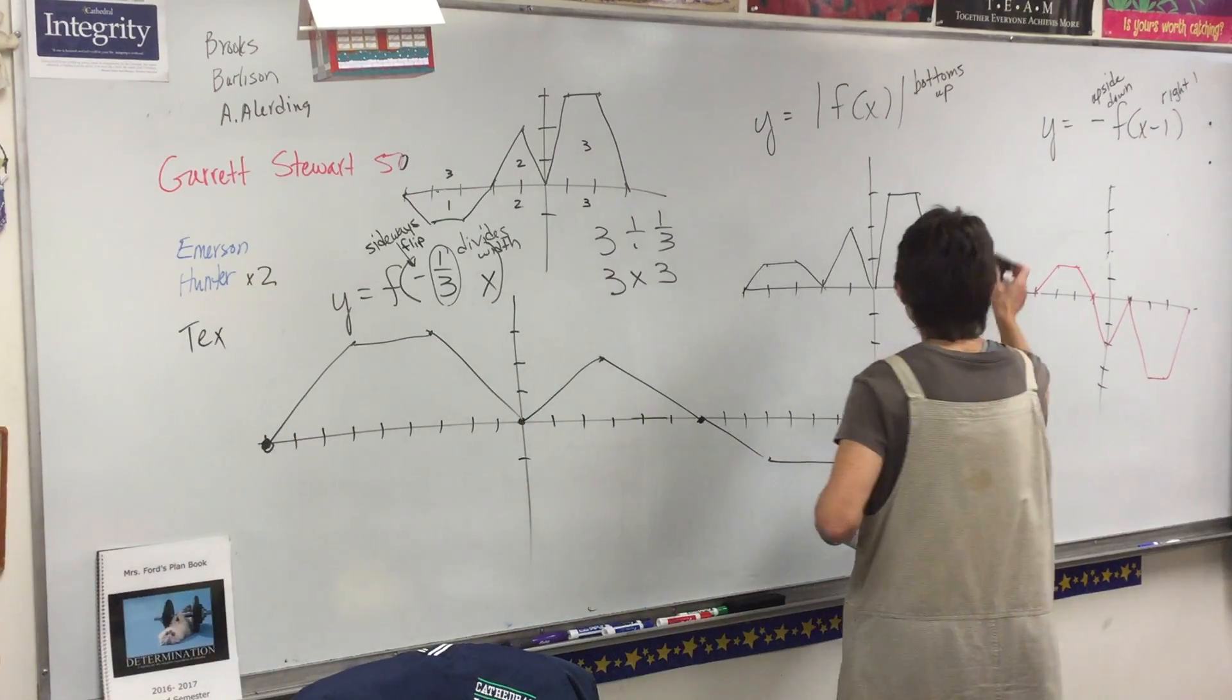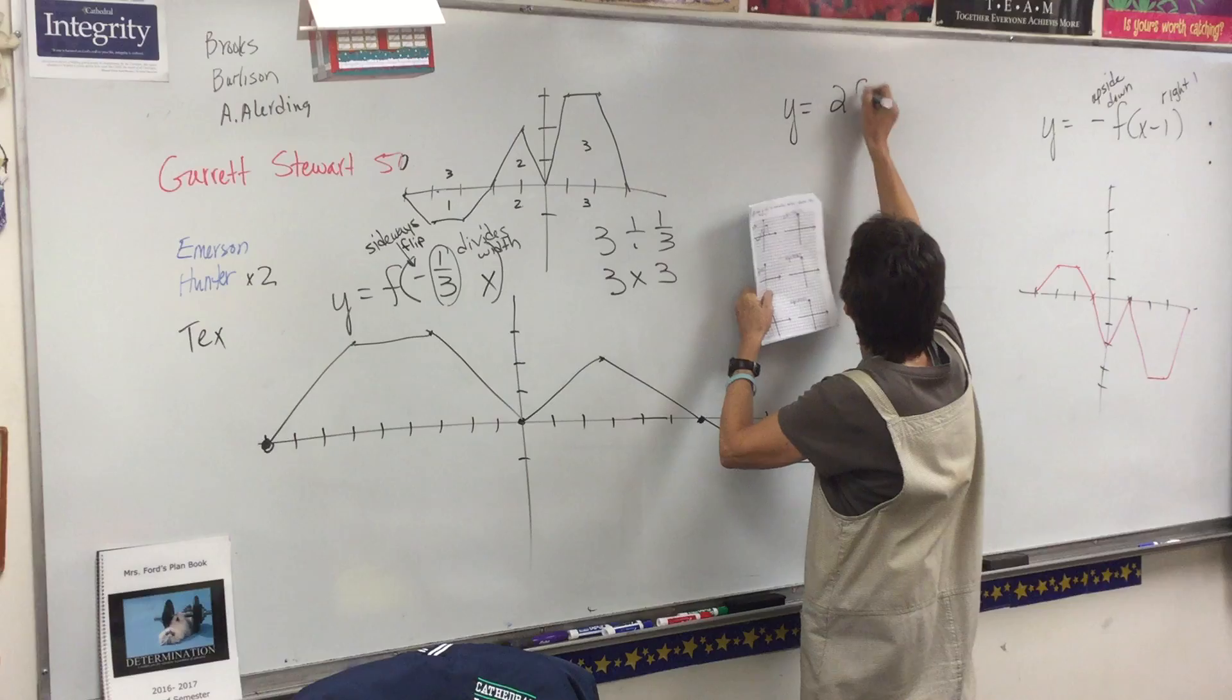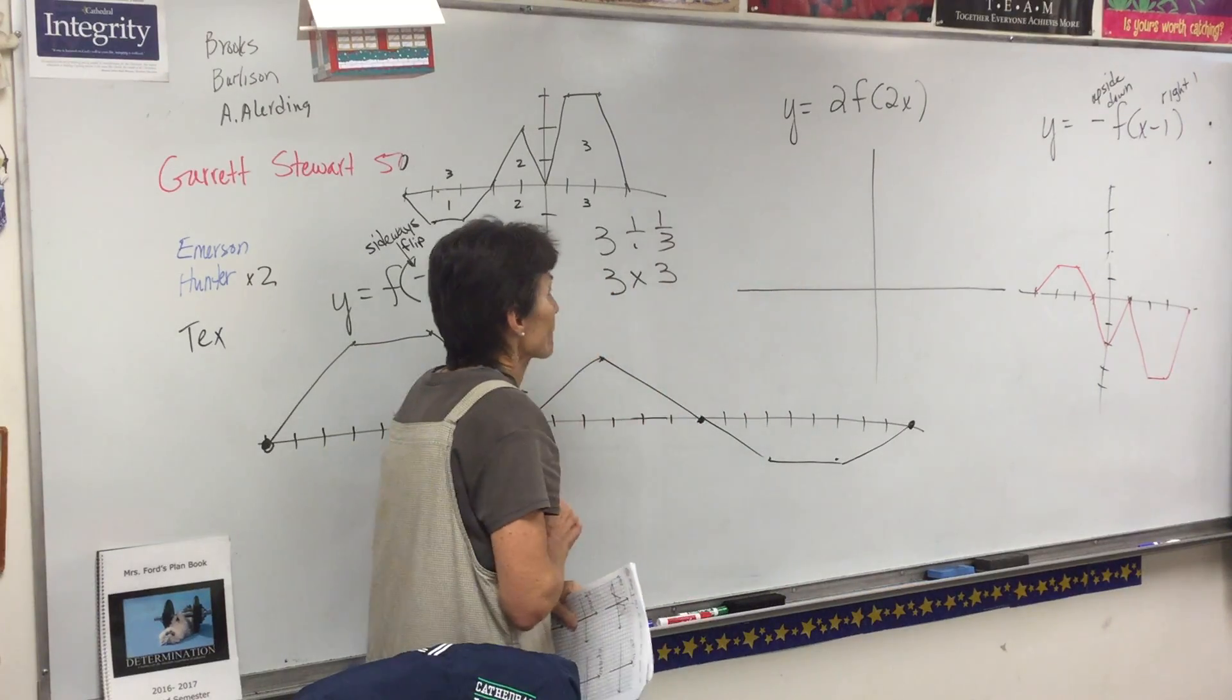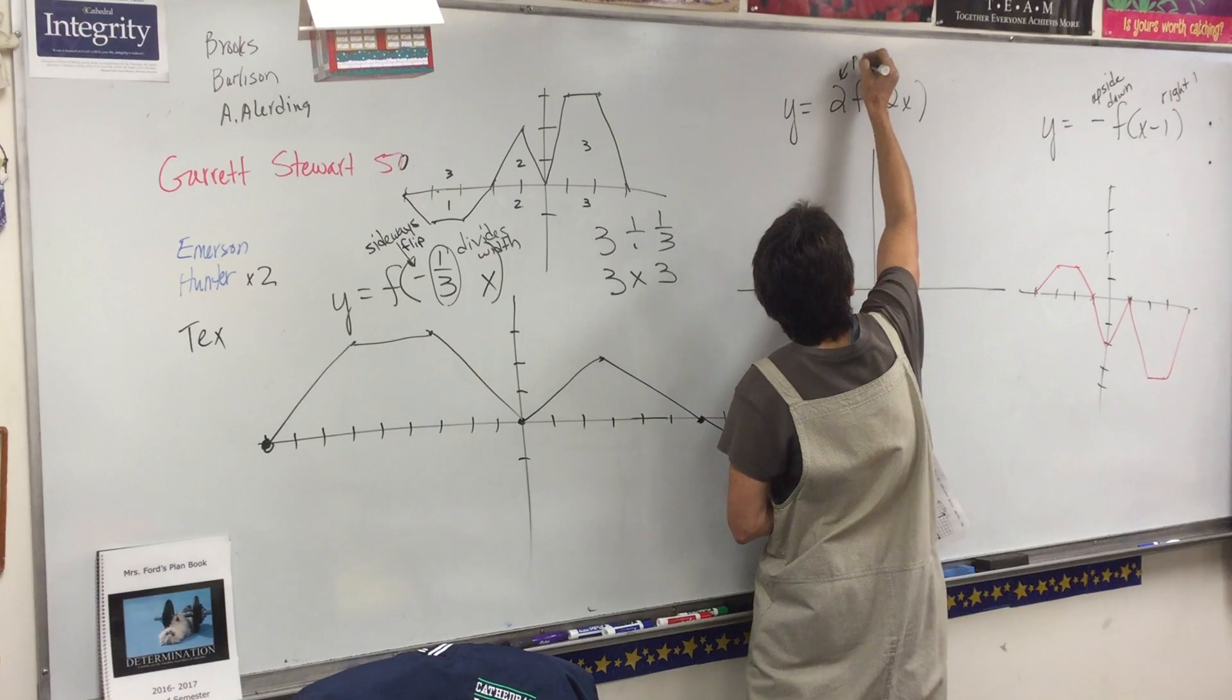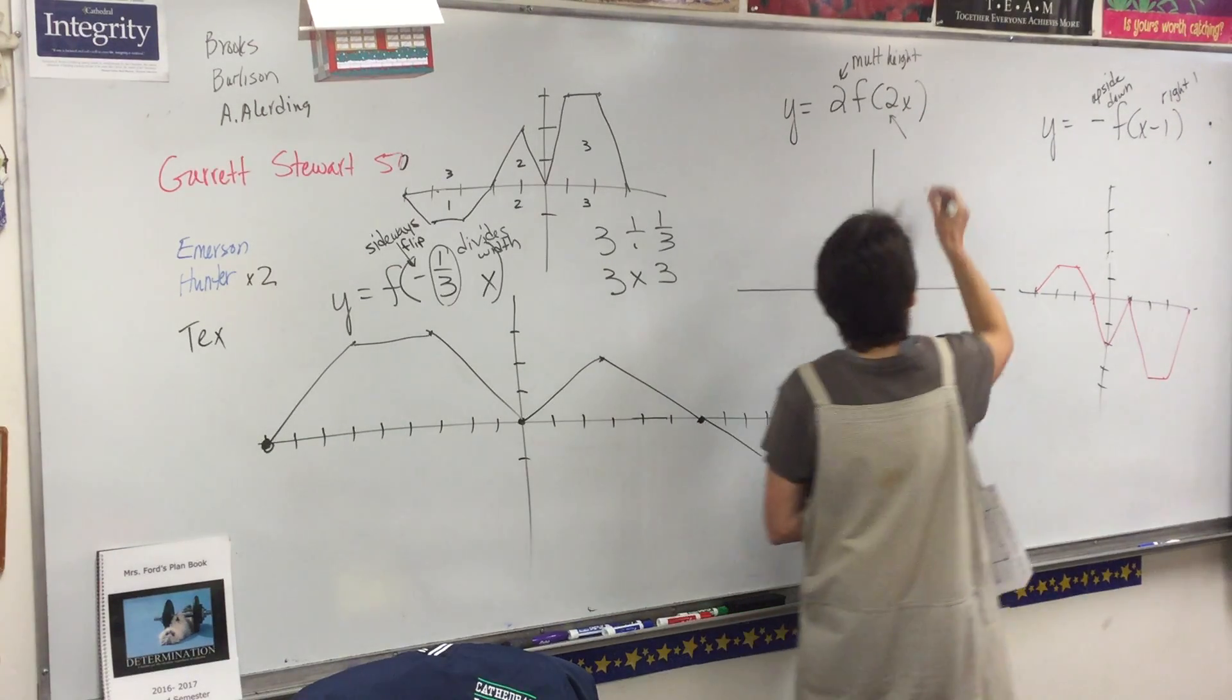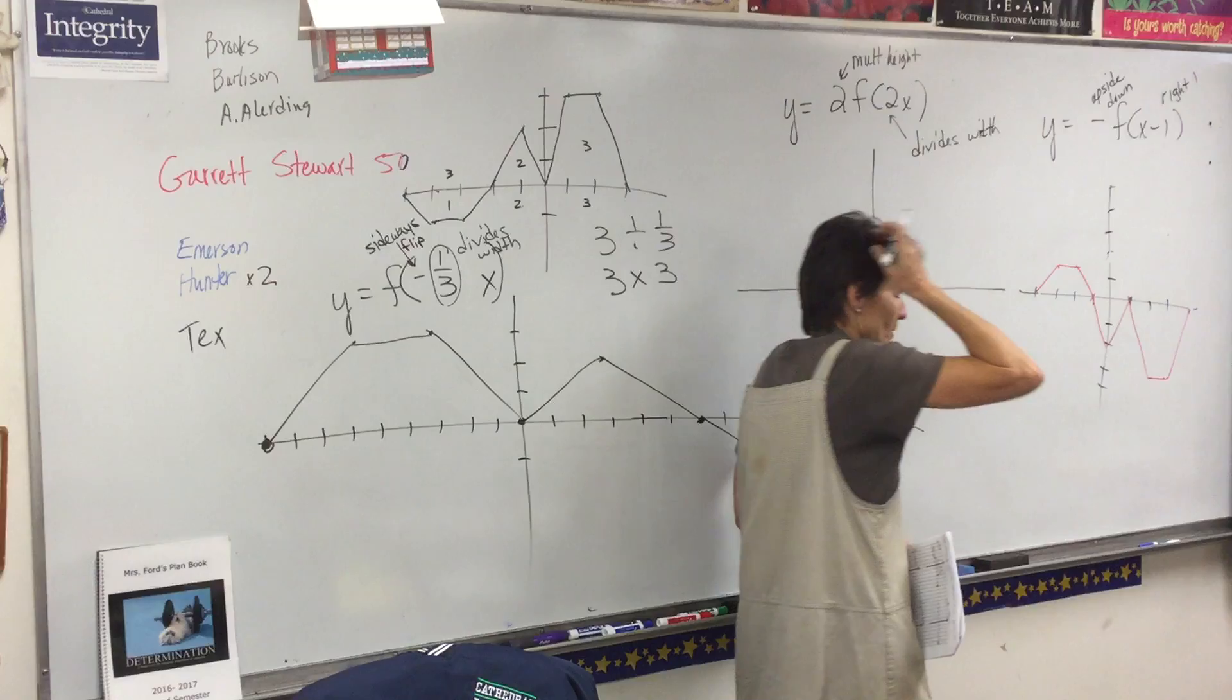And one more. Two things happening. What is this 2 do? Multiplies the height. What does that do? Divide the width. Okay, now wait a minute. Is anything moving? No. So this trapezoid is still going to be sitting right here.